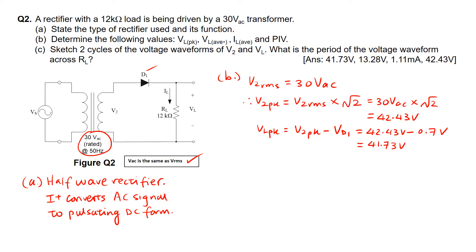Moving on to VL average. For a half-wave rectifier, the VL average formula is VL peak divided by π. So we plug in VL peak = 41.73V and divide by π. VL average is therefore equals to 13.28V.